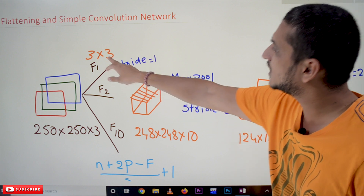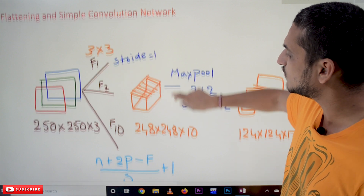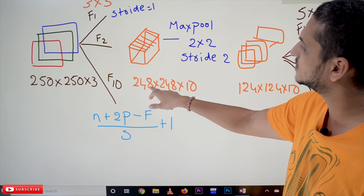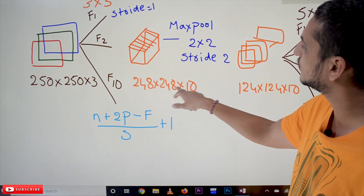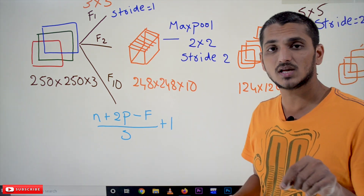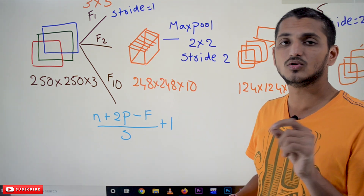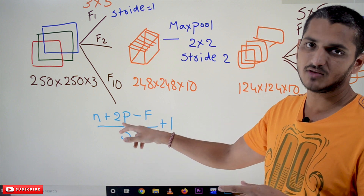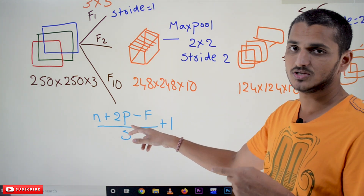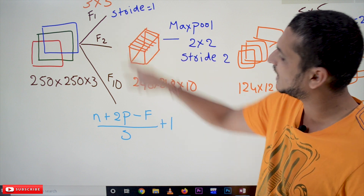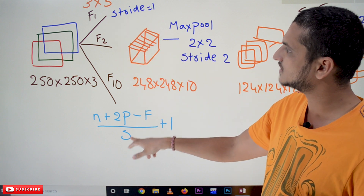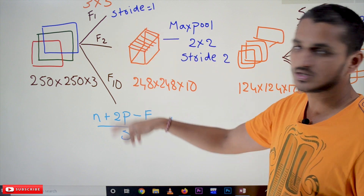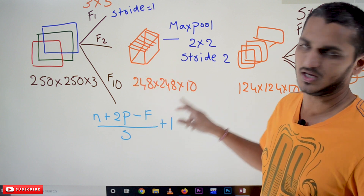Here we are using a stride equal to 1. Why did we get the image size of 248 by 248 by 10 in the convolution layer? The equation is: (N + 2P − F) / S + 1, where P is the padding value (padding = 0), F is the filter size (3), and S is the stride (1). This is the equation used to calculate the output image size.